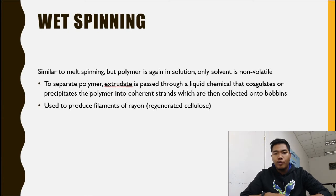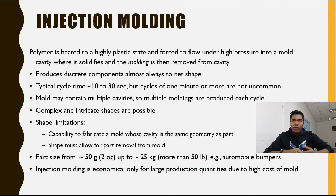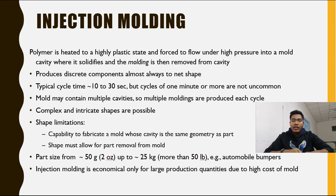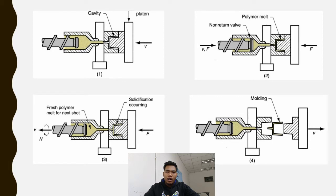Among the most popular methods is injection molding. In this process, the polymer is heated to a highly plastic state and forced under high pressure into a mold cavity where it solidifies, and the molding is then removed from the cavity. It produces discrete components, almost always to net shape. Typical cycle time is around 10 to 30 seconds, though cycles of one minute or more are not uncommon. There are two principal components: the injection unit, which melts and delivers the polymer melt and operates much like an extruder, and the clamping unit.